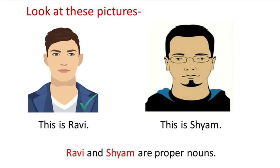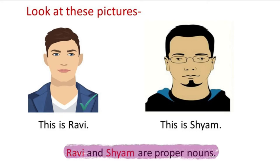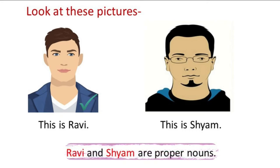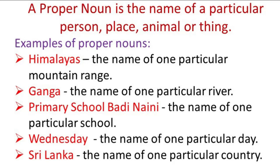So we may say that Ravi and Shyam are proper nouns. A name that is particular to any person, place, animal or thing is called a proper noun.